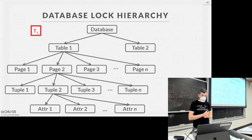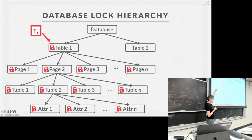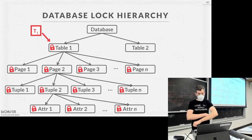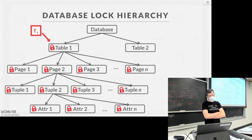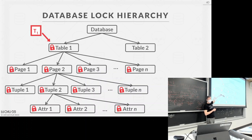When transaction T1 comes along, it can get a lock on the table, which implicitly acquires all the locks below it. Every other transaction has to come in and go through the same hierarchy — you can't just grab tuple locks directly. Everyone starts at the top and goes down. Not every system supports locks at the database level; at the very least you start at the table and go down.